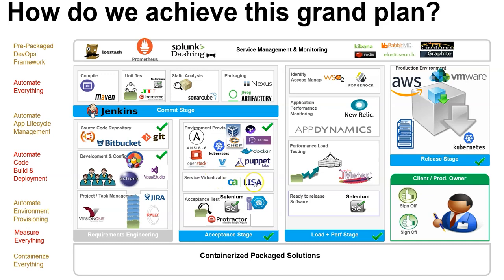For service virtualization: CA and Lisa. Acceptance testing: Selenium, Protractor. Identity and access management tools. Application performance monitoring tools. Performance load testing: JMeter. Ready-to-release software: Selenium. Testing teams handle functional testing on deployable software. For production environment: AWS, Kubernetes, Docker, VMware. For service management and monitoring: Logstash, Prometheus, Splunk. There are many more tools available, but we need to learn at least one tool per category.